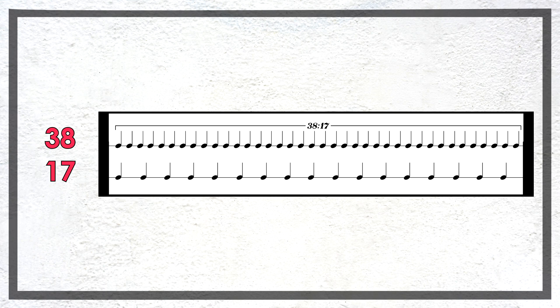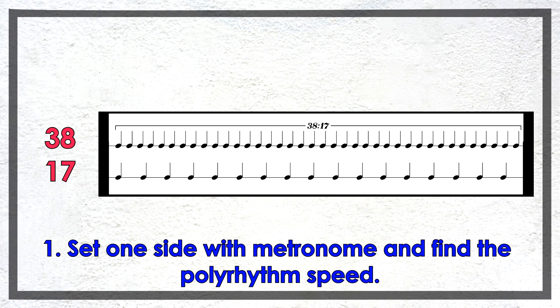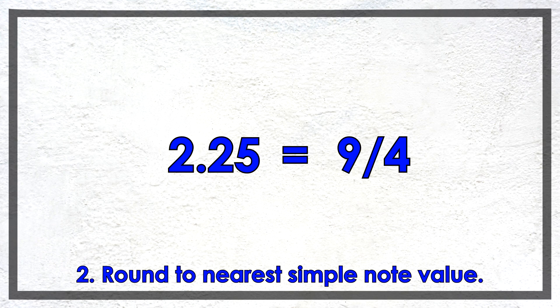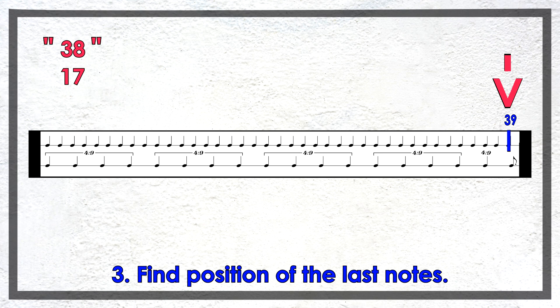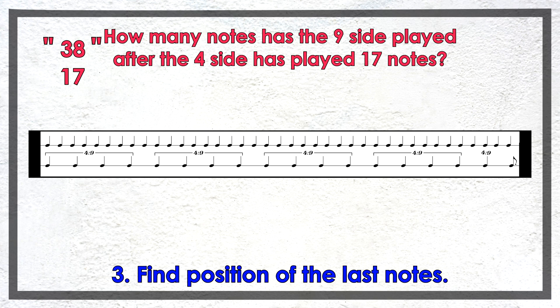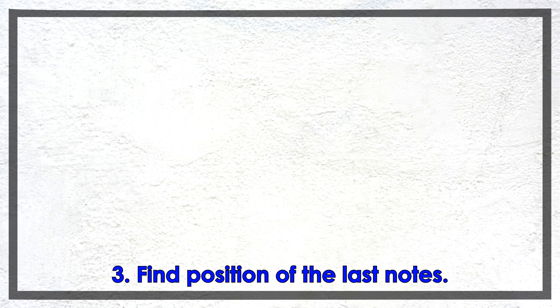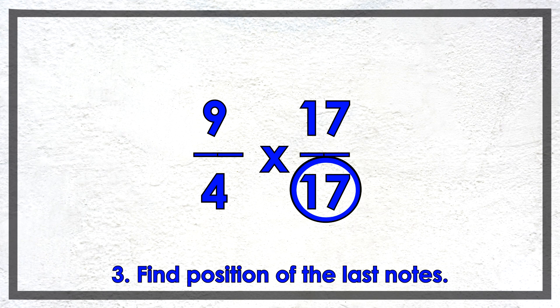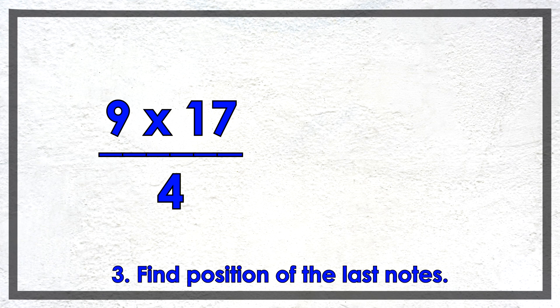Now we're going to go over how to play another complex polyrhythm using the same approximation method. Let's take a 38 against 17 polyrhythm. Our first task is to find the speed of the polyrhythm, so we'll set the 17 side to be with the metronome. Therefore the 38 side is 38 seventeenths the speed of the 17 side. 38 over 17 is about 2.235, which is approximately 2.25, and as a fraction that's 9 over 4. Now we're going to find the position of the 39th note of the 9 side and the 18th note of the 4 side — these are the notes we want to have line up to create the 38 against 17. We multiply 9 over 4 by 17 over 17, giving us 9 times 17 divided by 4, which gives us 38.25.